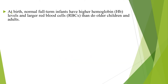At birth, normal full-term infants have higher hemoglobin levels and larger red blood cells than older children and adults. This is because during the fetal period, erythropoiesis occurs everywhere in every bone marrow, whereas later it becomes confined to more flat bones. So at birth, neonates have a higher number of hemoglobin and red blood cell mass than older children and adults.